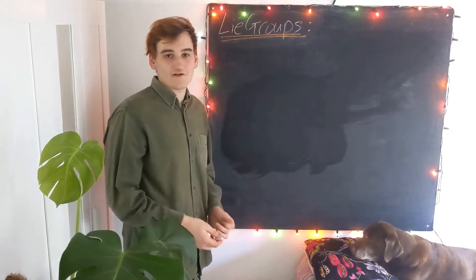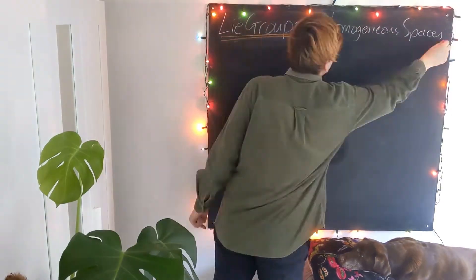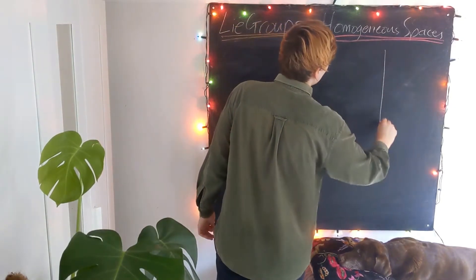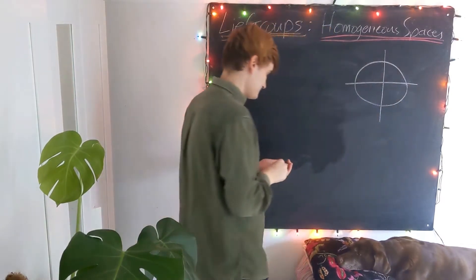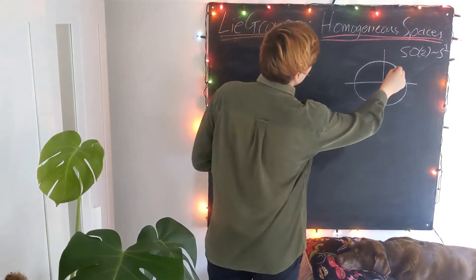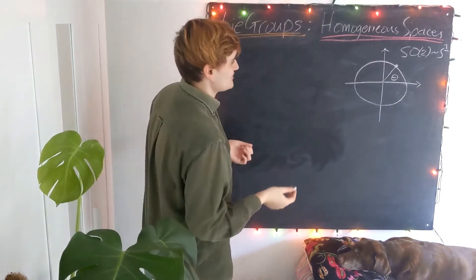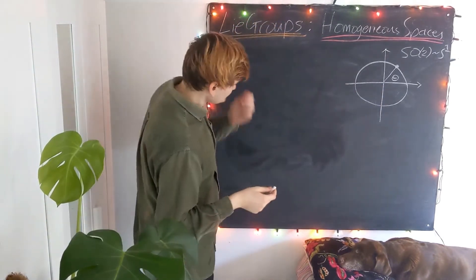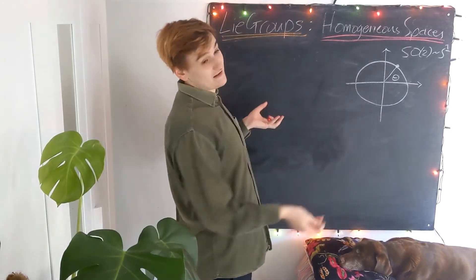Now we've been briefly acquainted with the groups SO2 and SO3, let's talk about homogeneous spaces. To get used to this idea, let's revisit the case of SO2, where we saw that the group SO2 is essentially topologically the same thing as a circle. All the points on this circle represent some particular element in the group, and we have one free parameter theta — a one-dimensional manifold. One nice way to view a Lie group is essentially a manifold that is highly symmetric.